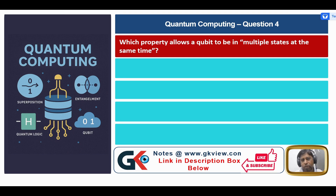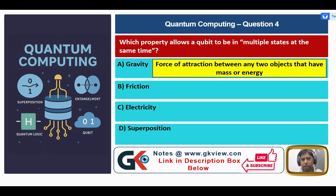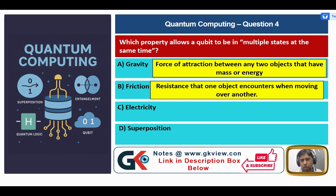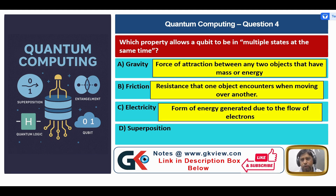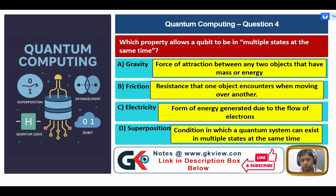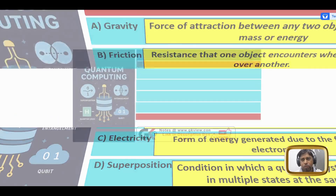Question 4: Which property allows a qubit to be in multiple states at the same time? A. Gravity, B. Friction, C. Electricity, D. Superposition. Gravity is a force of attraction between any two objects with mass or energy. Friction is the resistance one object encounters when moving over another. Electricity is energy generated due to the flow of electrons. Superposition is a condition in which a quantum system can exist in multiple states at the same time. So, the answer is D — Superposition.